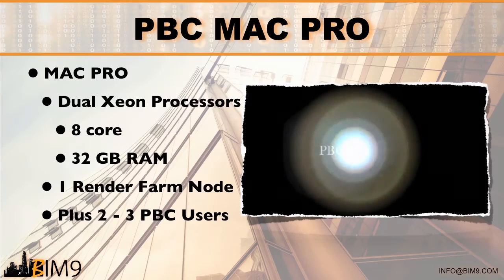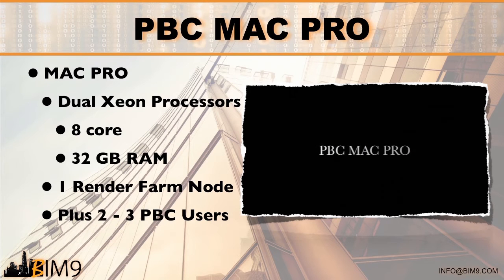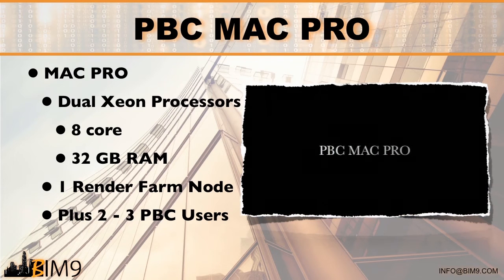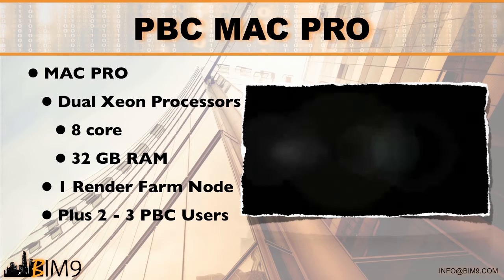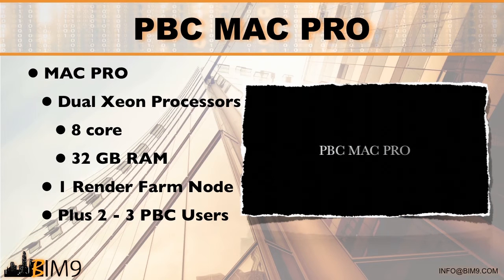One of the first private BIM clouds was actually based on Mac Pros. Both Lonnie Compton and Bill DeBevick did a lot of benchmarking and found that Mac Pros ran Revit and other Autodesk products very efficiently natively. When they found themselves with a surplus of Mac Pros, instead of letting them sit around they put them to good use and built a combination render farm and private BIM cloud. Each of the dual Xeon eight-core machines with 32 gigabytes of RAM were configured to run a 3D Studio Max render node and support two to three private BIM cloud users simultaneously. Users couldn't tell if someone else was on the cloud — or even if the machine was also rendering.